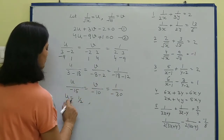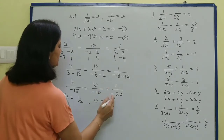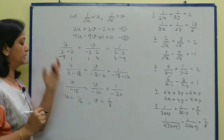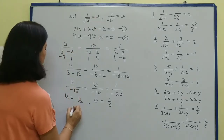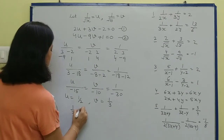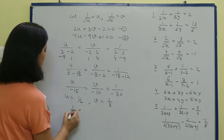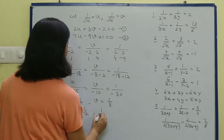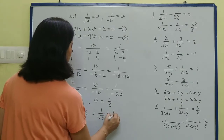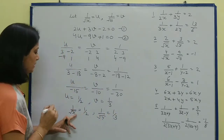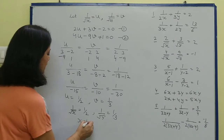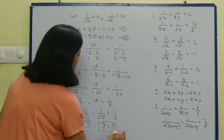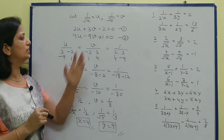From these values: u = -15 upon -30 = 1 upon 2, and v = -10 upon -30 = 1 upon 3. Now putting these back: 1 upon √x = u = 1 upon 2, and 1 upon √y = v = 1 upon 3. Squaring both sides: x = 4 and y = 9. That is our answer.